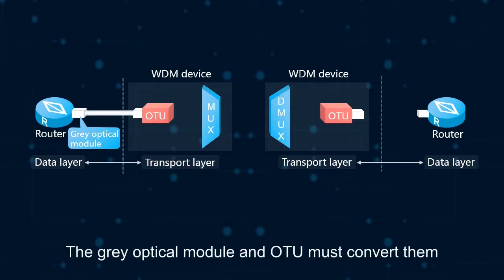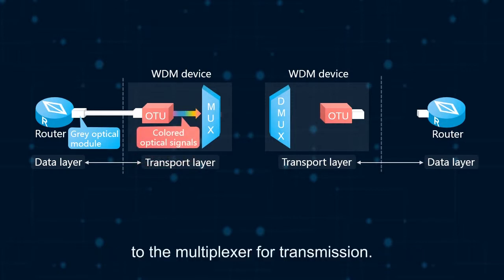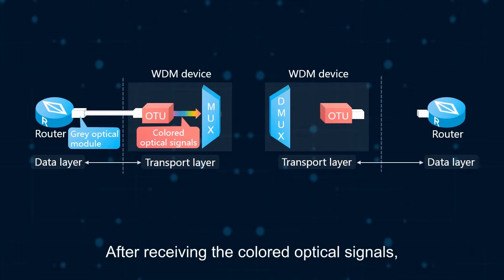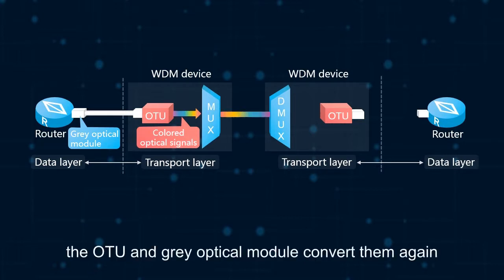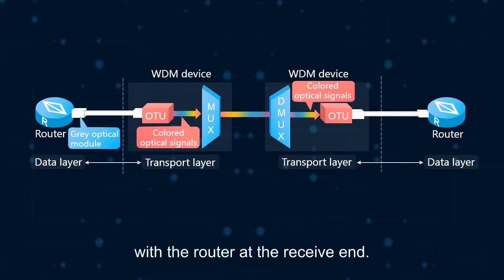The gray optical module and OTU must convert them into colored optical signals before outputting them to the multiplexer for transmission. After receiving the colored optical signals, the OTU and gray optical module convert them again into gray optical signals to interconnect with the router at the received end.